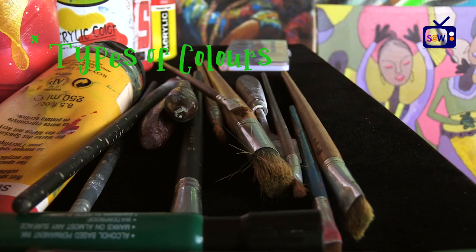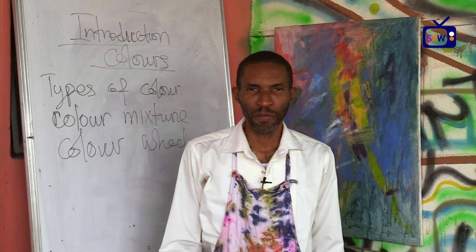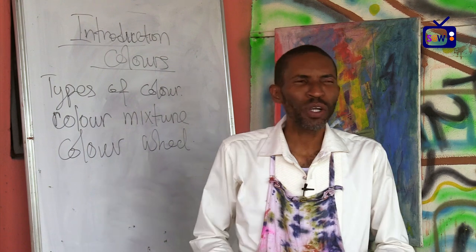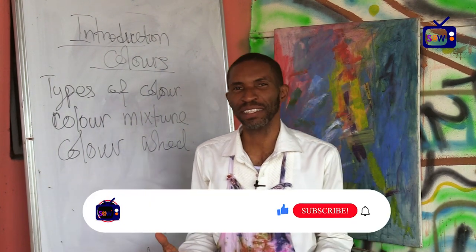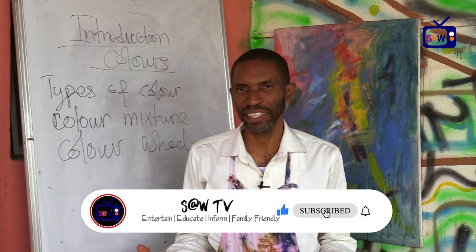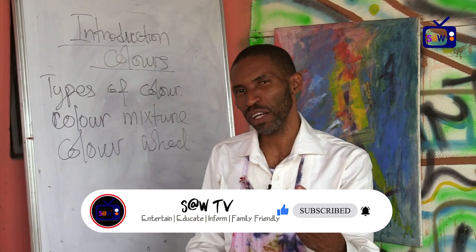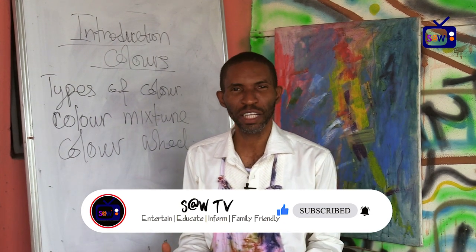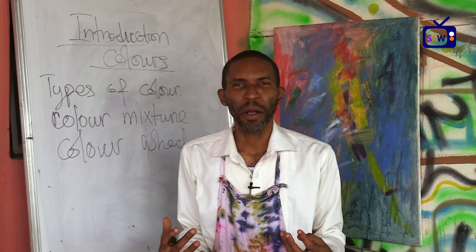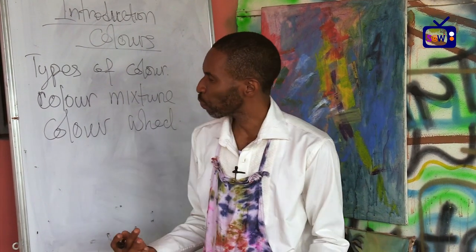We'll talk about types of colors, color mixtures, and the color wheel. First and foremost, look around you — colors are everywhere. Colors give an object its true identity. There's no way you're going to do anything without using colors, and the fun thing about color is to try to feel it and enjoy it when you see it.